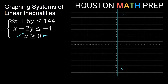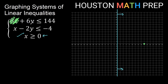For 8x plus 6y less than or equal to 144, finding the x-intercept: zero out y, giving 8x equal to 144. Dividing by 8 gives x equal to 18, so plot 18 on the x-axis. My boxes go by 2 since numbers are bigger. For the y-intercept, zero out x: 6y equal to 144. Dividing by 6 gives y equal to 24, so plot 24 on the y-axis.